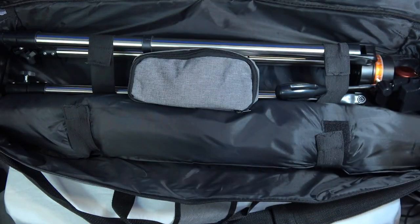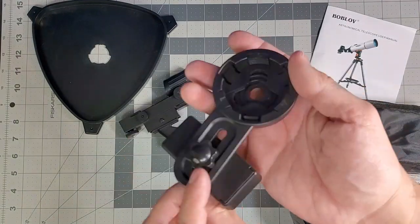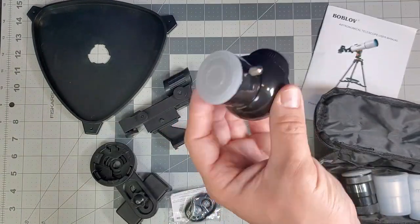Instructions, tripod, scope, along with another case housing the holographic sight, phone adapter, Bluetooth remote shutter, zenith mirror, 3x Barlow lens, 10 millimeter eyepiece, and a 25 millimeter eyepiece.